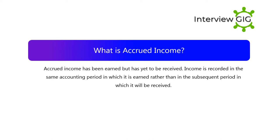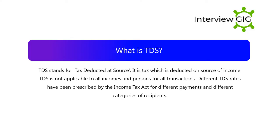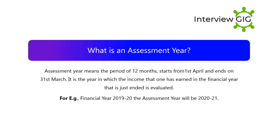Income is recorded in the same accounting period in which it is earned rather than in the subsequent period in which it will be received. What is TDS? TDS stands for Tax Deducted at Source. It is a tax which is deducted at the source of income. TDS is not applicable to all incomes and persons. For all transactions, different TDS rates have been prescribed by the Income Tax Act for different payments and different categories of recipients.